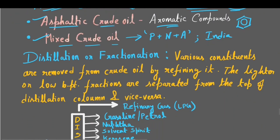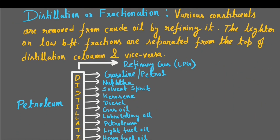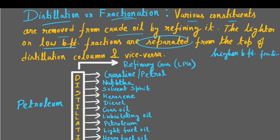To separate all these individual constituents from petroleum, we need to apply some technique, and the most common technique is distillation or fractionation. In this technique, various constituents are removed from crude oil by separating the lower boiling point fractions from the higher boiling point fractions. The lower boiling point fractions are the lighter fractions, separated from the top of the distillation column, while heavier fractions are separated from the bottom.